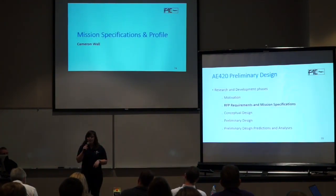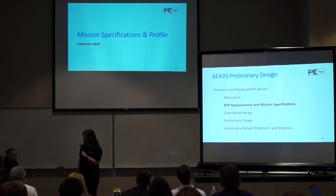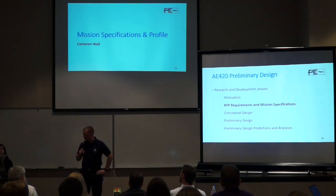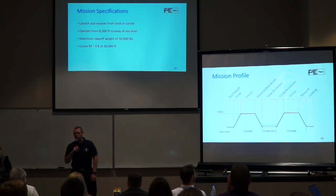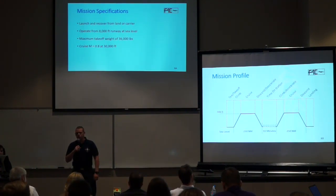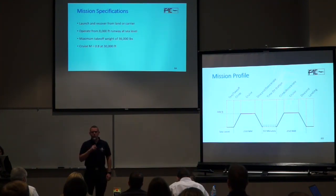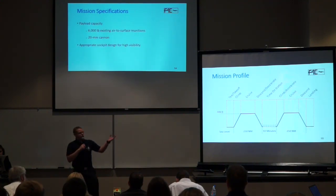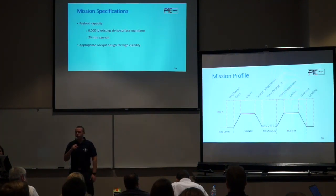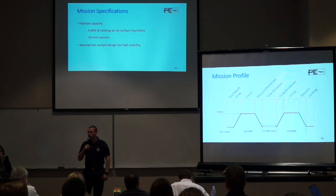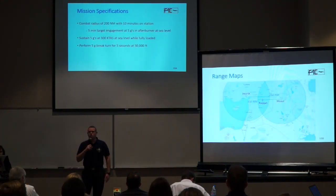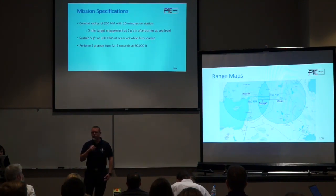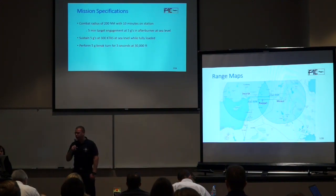Cameron will now discuss the RFP requirements. Our aircraft had to be able to launch and recover from a land runway or an aircraft carrier. If operating from a runway, we could use no more than 8,000 feet for departure and landing. We had a maximum takeoff weight of no greater than 36,000 pounds, and had to cruise at Mach 0.8 at 30,000 feet. We required a payload capacity of no less than 6,000 pounds of existing air-to-surface munitions, along with a 20mm cannon, appropriate cockpit design for high visibility, a combat radius of no less than 200 nautical miles, and the ability to spend at least 10 minutes on station — 5 of which would be spent at 5Gs with afterburner. We also had to sustain 5Gs at 300 knots at sea level, and perform a 5G break turn for 5 seconds at cruising altitude.